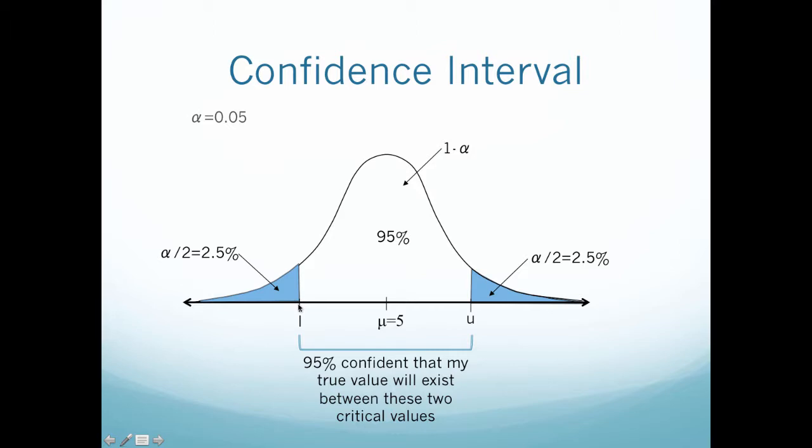And in general, I am going to state the level of my confidence interval. So it's either going to be 90, 95, or 99%. So 95 is a good value that you'll see a lot. So with the 95% confidence interval, what that means is that I am 95% confident that my true value will exist between these two critical values.